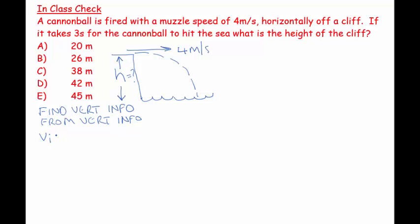We know that our Vi vertically equals 0 m/s. Now, I know it's traveling at 4 m/s horizontally, but that is at 90 degrees from the vertical axis. When axes are at 90 degrees to each other, we call them orthogonal.